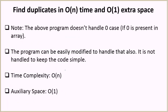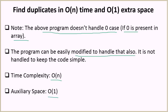The above program doesn't handle the case where one of the numbers is zero, because we cannot negate zero. However, this can easily be modified to handle that too — we just increment all the numbers by one before processing and then decrement all the numbers by one after processing. Then that case can also be handled correctly.